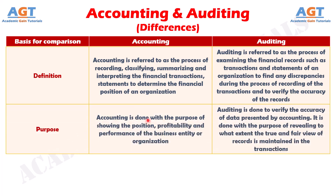Number two: Accounting is done with the purpose of showing the position, profitability, and performance of the business entity or organization. Whereas auditing is done to verify the accuracy of data presented by accounting, and is done with the purpose of revealing to what extent the true and fair view of records is maintained in the transactions.